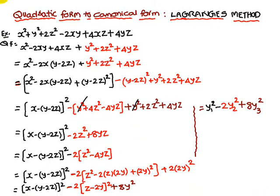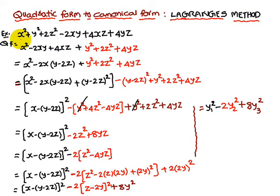Today we are going to discuss quadratic form to canonical form using Lagrange's method. The problem we are given is: x squared plus y squared plus 2z squared minus 2xy plus 4xz plus 4yz.